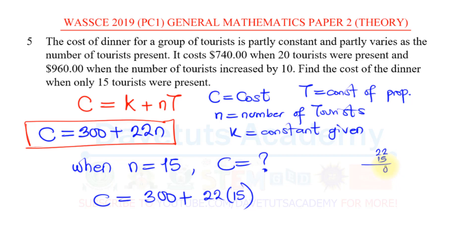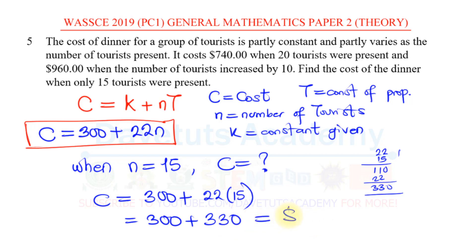5 times 2 is 10, carry 1; that gives 110. Then 22 times 1 is 22, shifted gives 330. So C = 300 plus 330, which equals 630 dollars. The cost of dinner when there are 15 tourists is $630. With that, we have solved this question of variation.